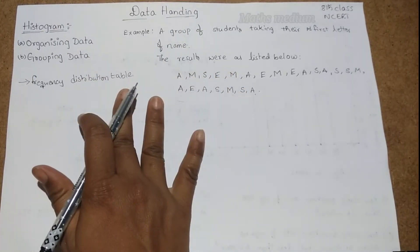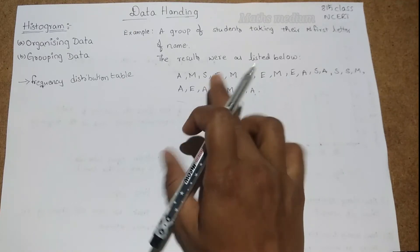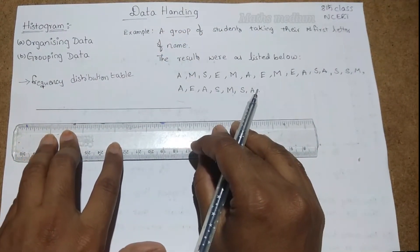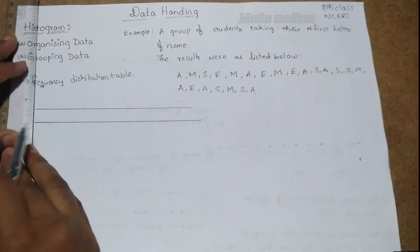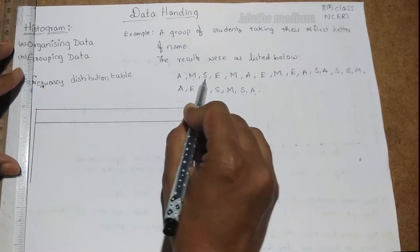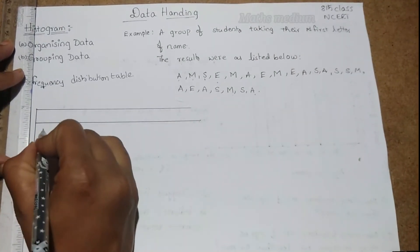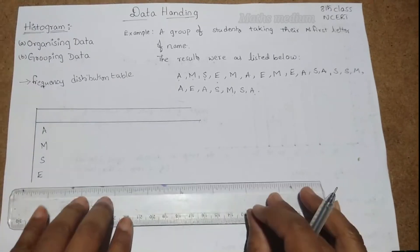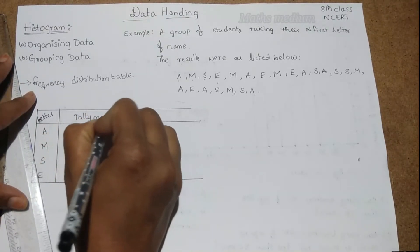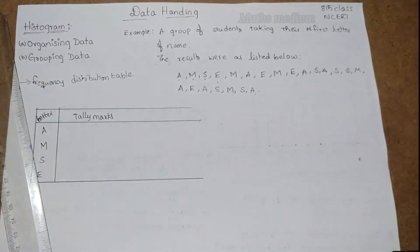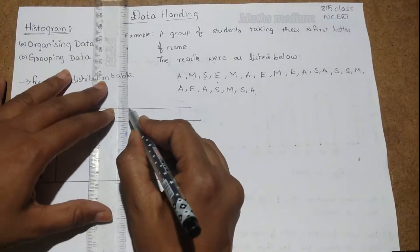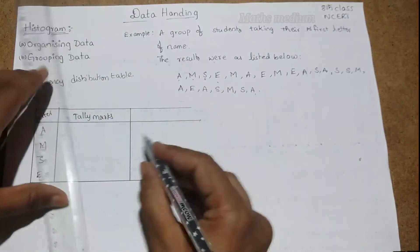The frequency distribution table has the letters of the name. We have four letters: A, M, S, E. Make a table with columns for the letter, tally marks, and number of students. Tally marks show how many A's, M's, S's, and E's there are.